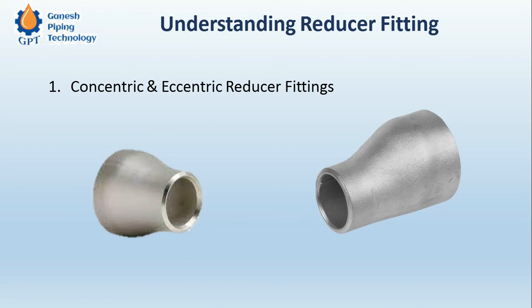For a reducer, there are always two diameters — a large diameter L1 and a small diameter L2. If both L1 and L2 fall in the large bore range, that is 2 inch and above, there is no problem — we can use a conventional reducer fitting, either concentric or eccentric, because on both sides we are going to use butt welded fittings.